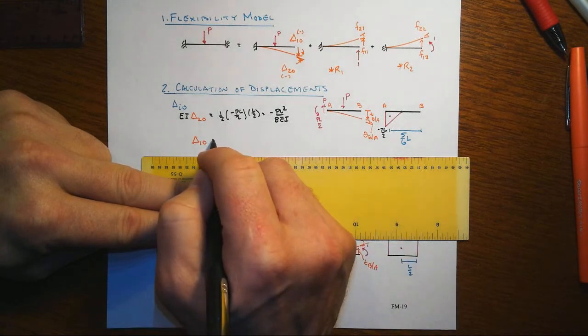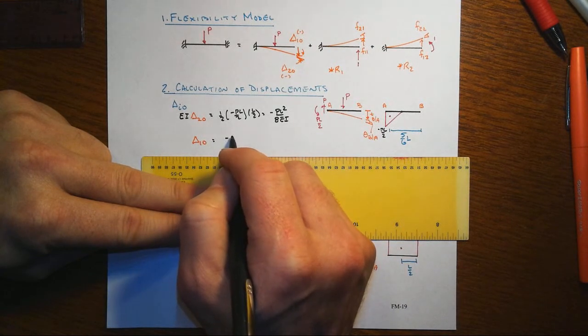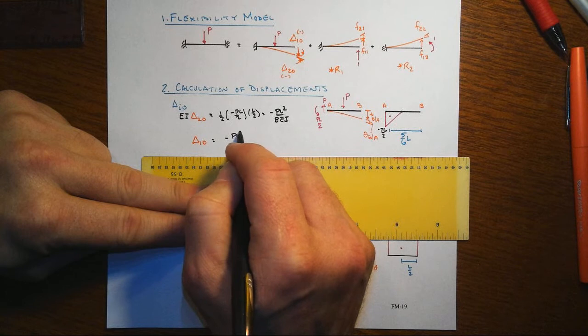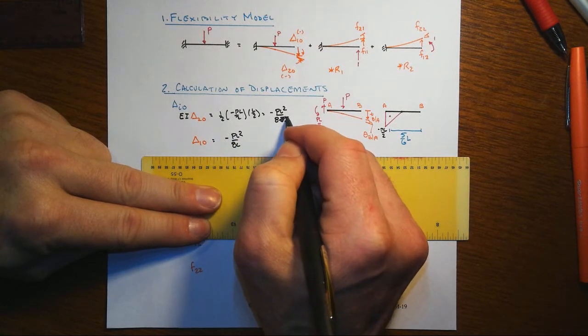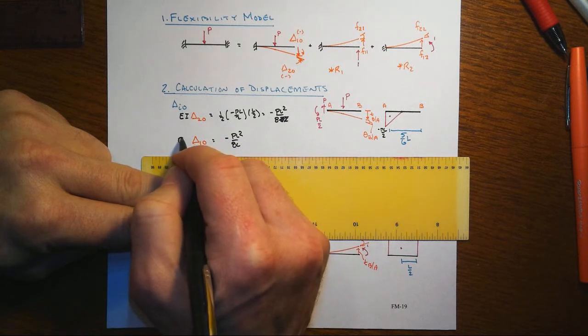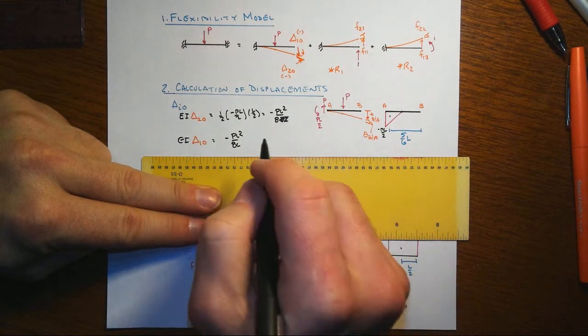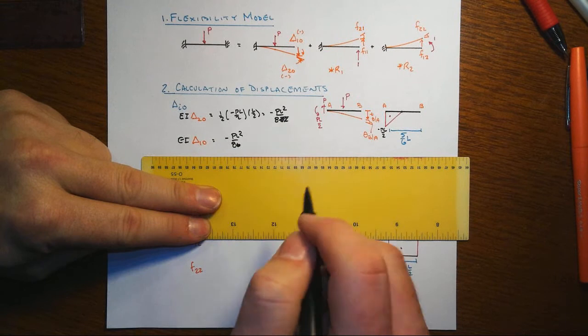So we're going to take this moment of the area, which we already found is PL squared over, oops, I said I wasn't going to include the EI, and then I go and I do it. So the whole point was not to have to write 1 over EI all the time.